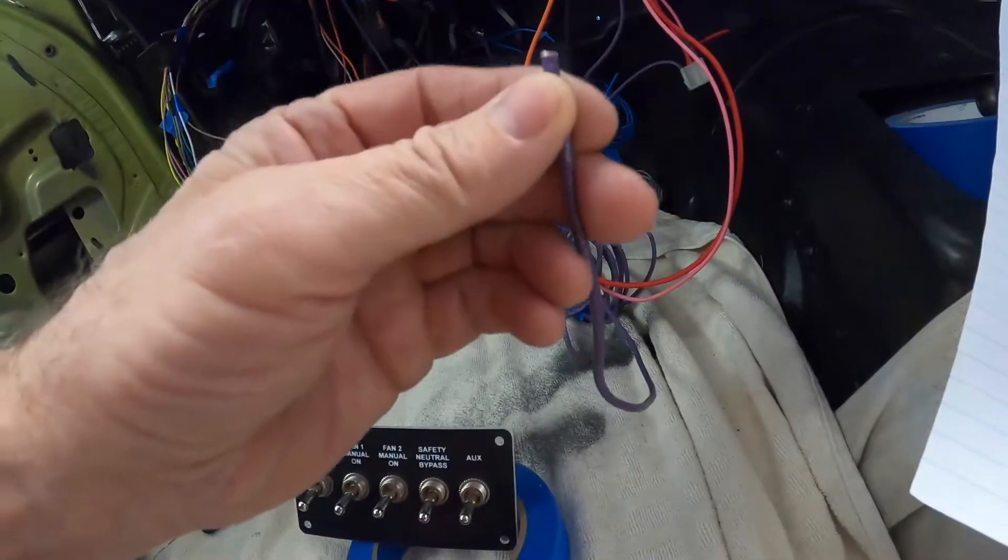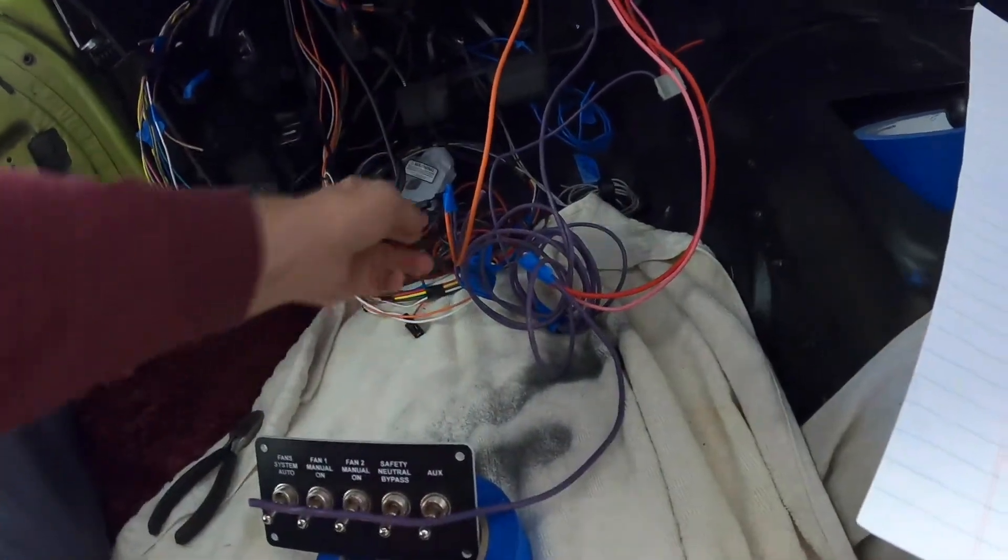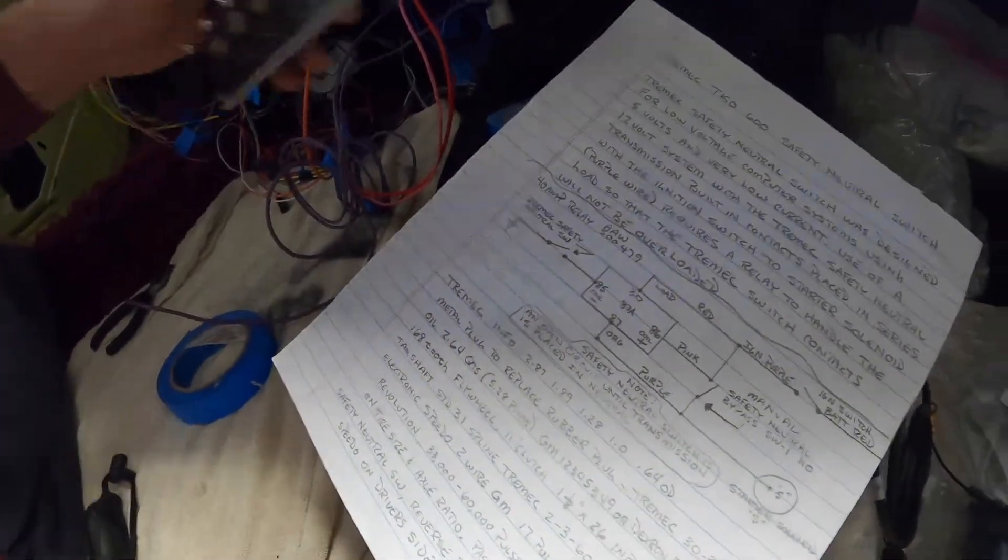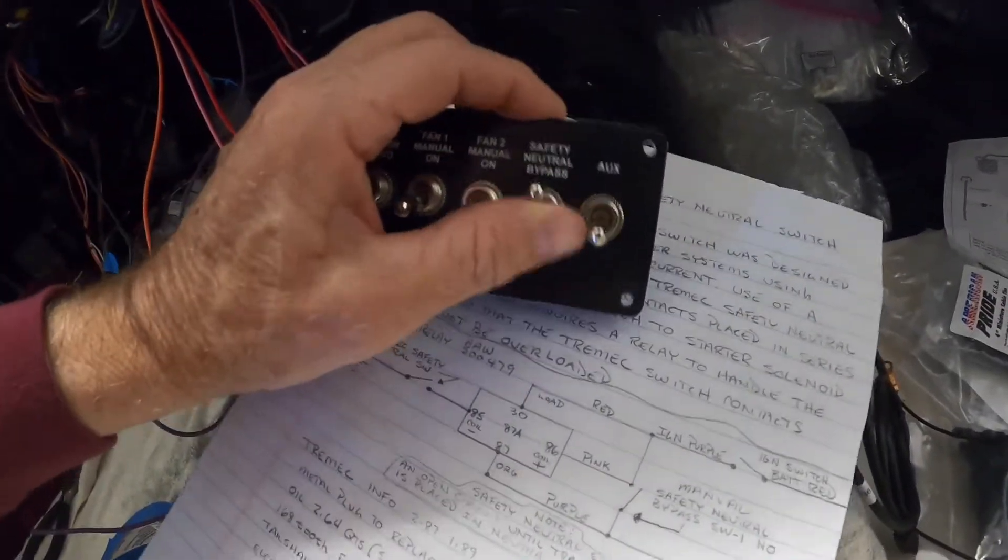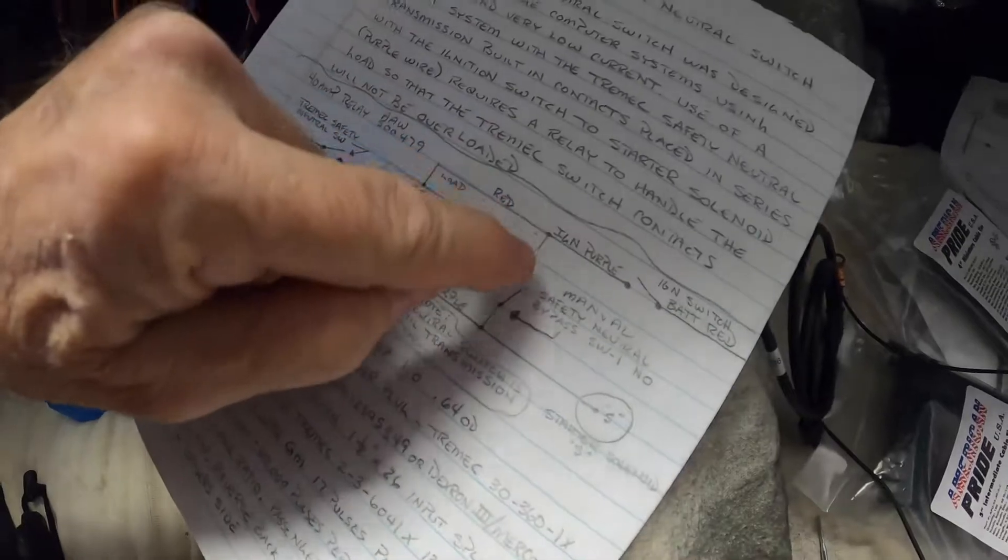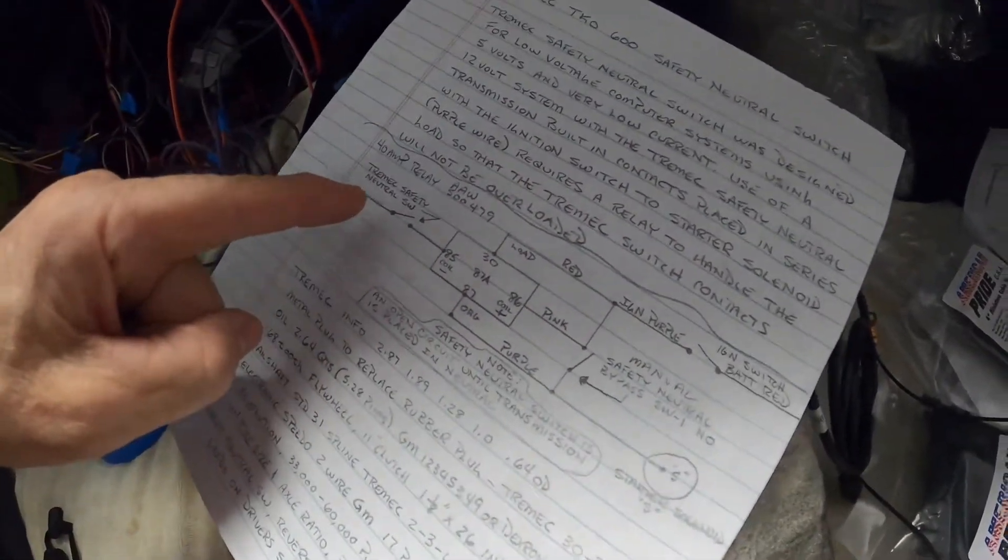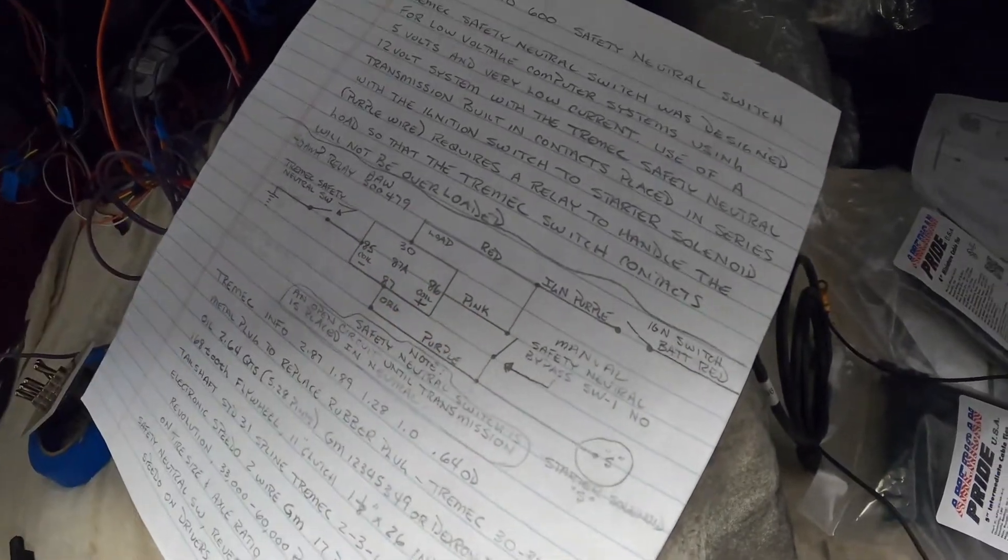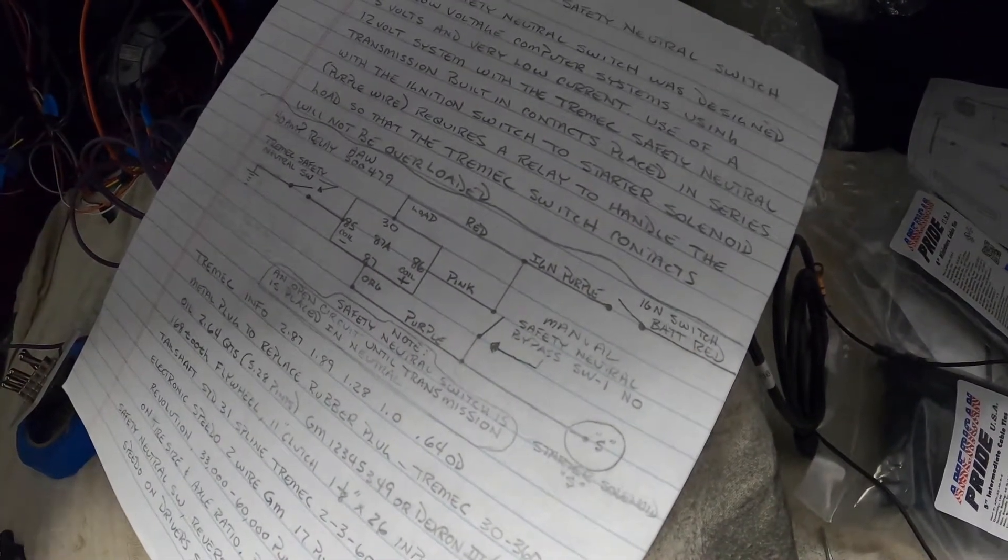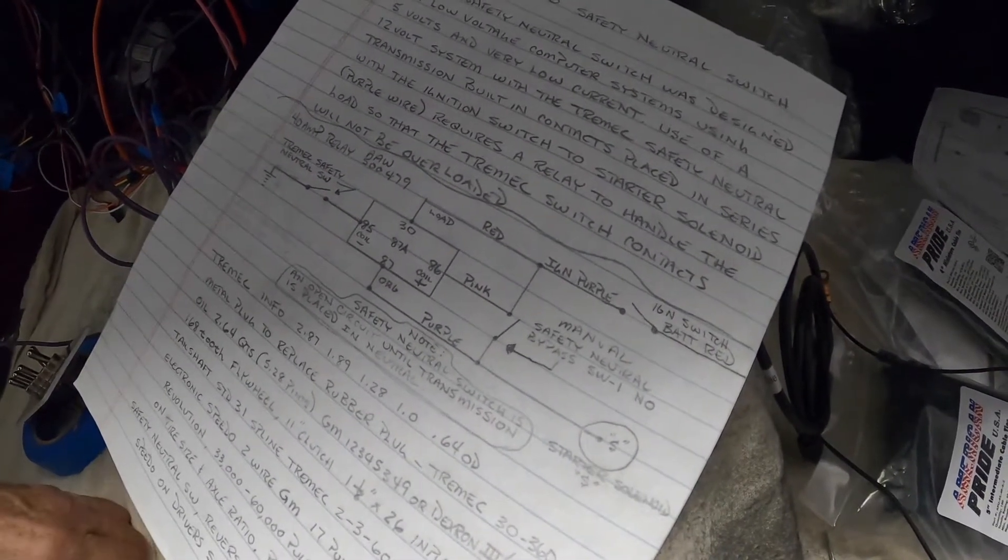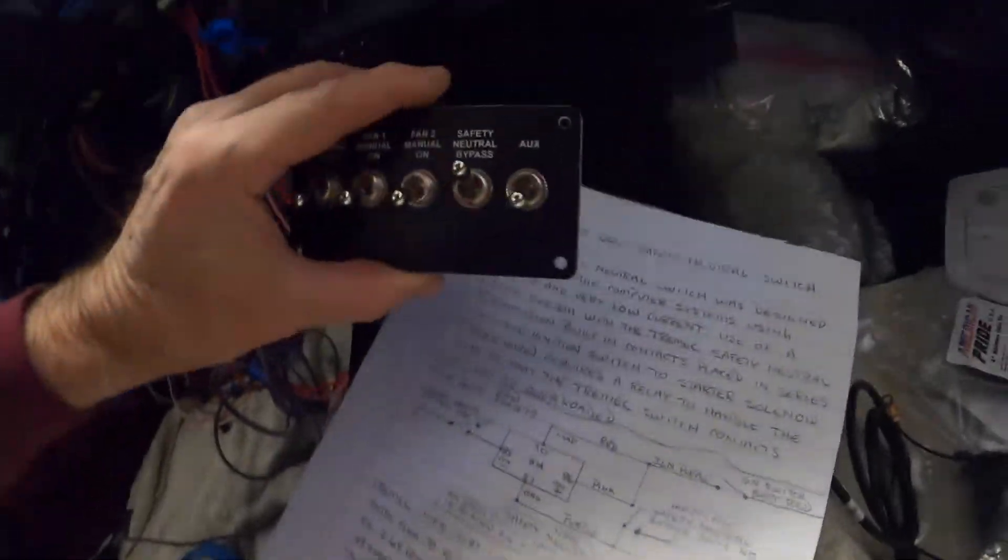And this purple wire and the other purple wire off the ignition switch will go through this switch. So when I engage this switch here, that closes this contact and bypasses the relay and the transmission, which allows me to start the car without having to jump wires or get creative if I get stranded on the road. So that's why I put this switch in.